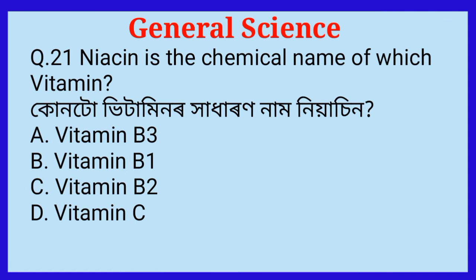Question number twenty-one: Niacin is the chemical name of which vitamin? What is the vitamin whose other name is niacin? The answer is vitamin B3.